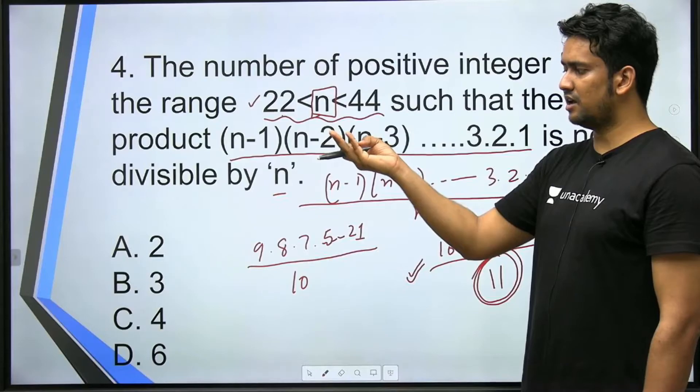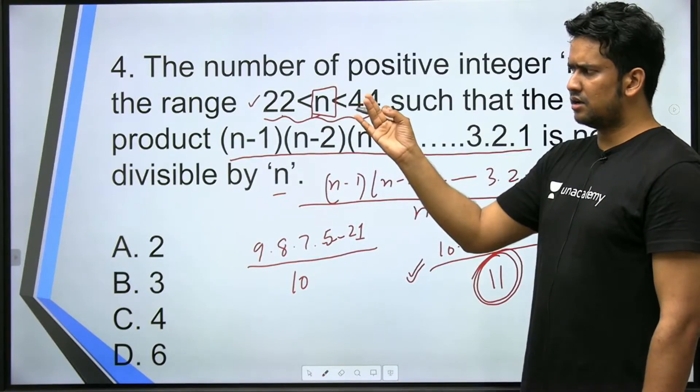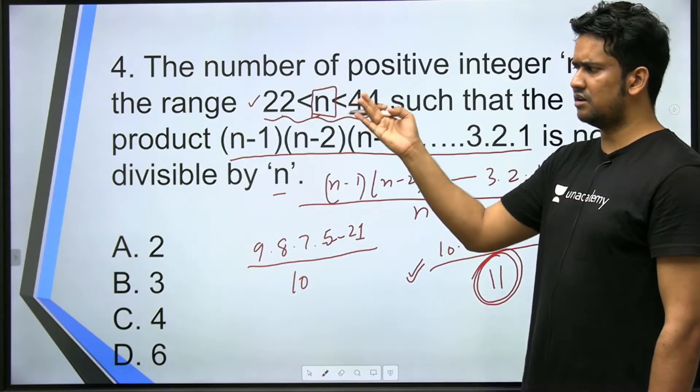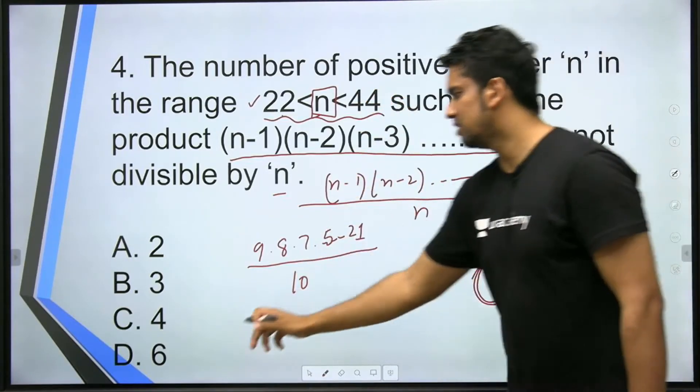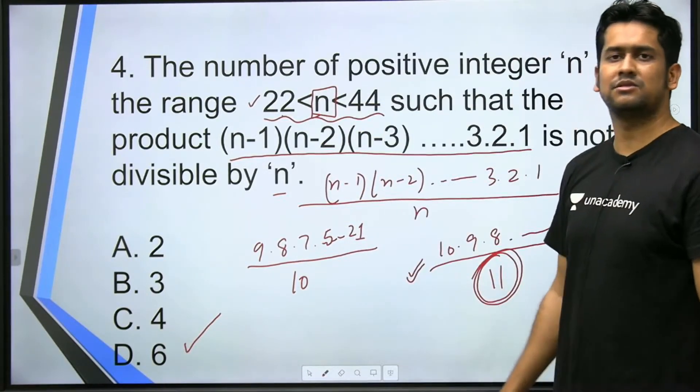Let me write them down: 23, 29, 31, 37, 41, 43. There are total six prime numbers. So that is your answer.